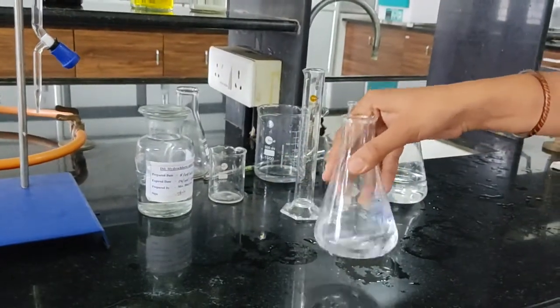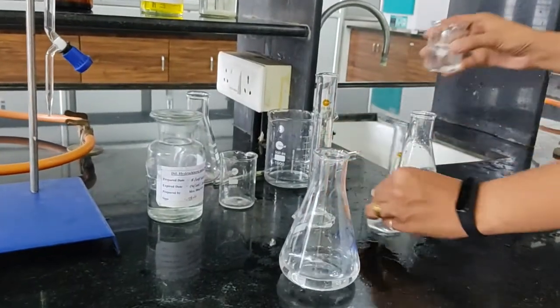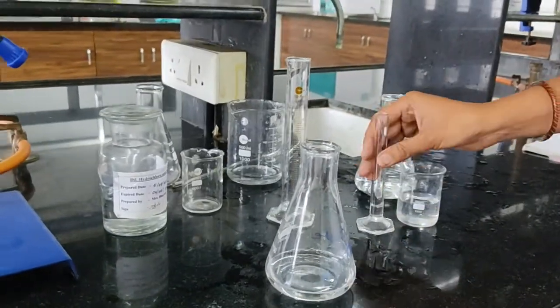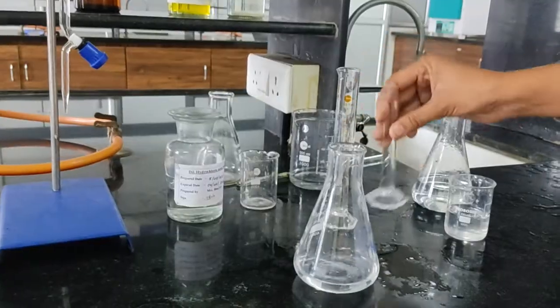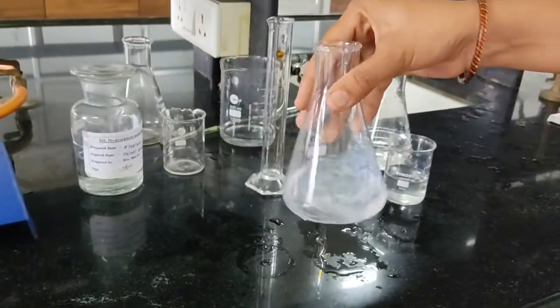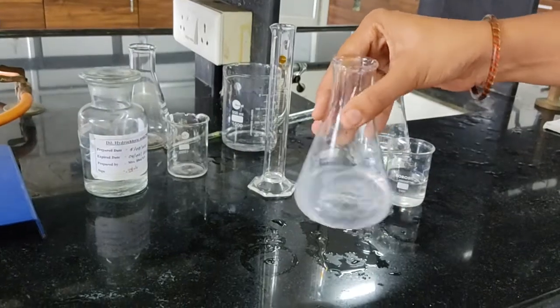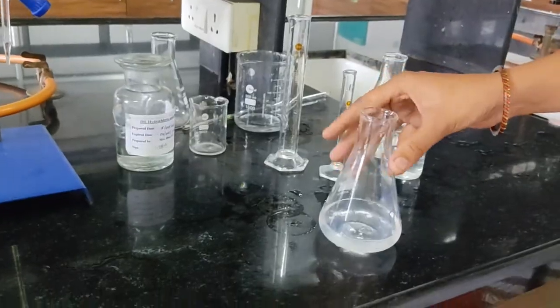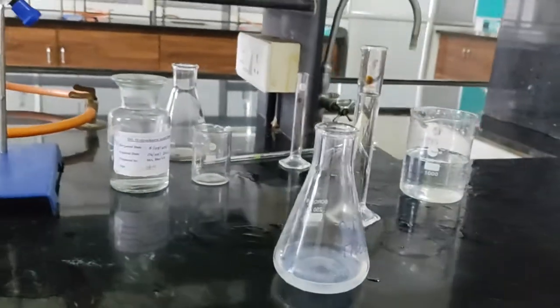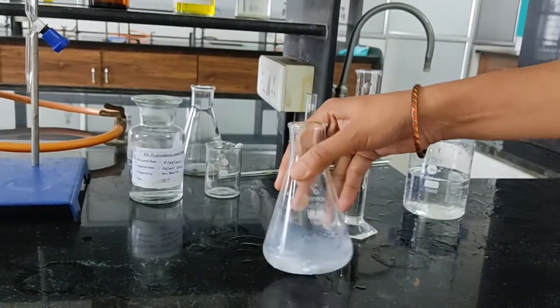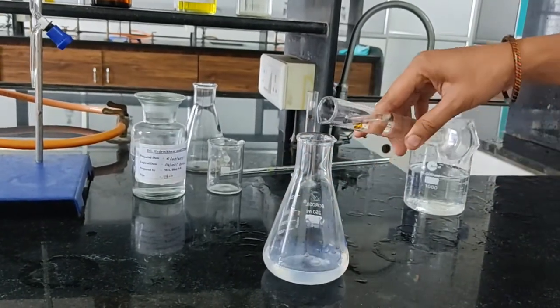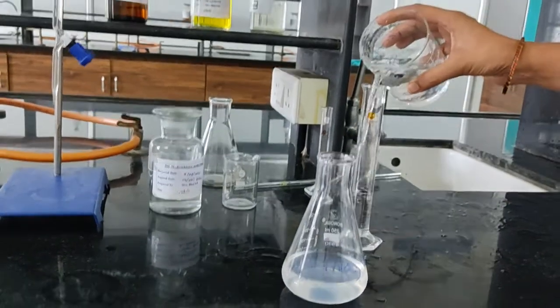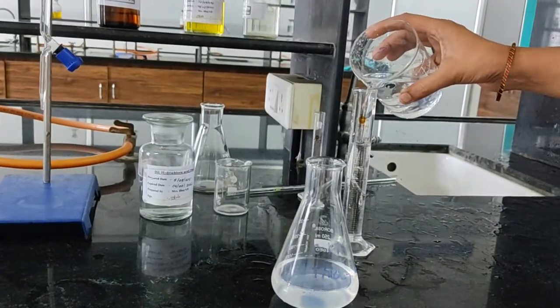To this solution we have to add 2 molar sodium hydroxide solution for neutralization. Add 2 to 3 ml of this 2 molar sodium hydroxide solution. Shake it properly and dilute this solution about 150 ml of water. Then dilute this solution about 150 ml of distilled water. So add 130 ml of water. So it becomes 150 ml of resulting solution.